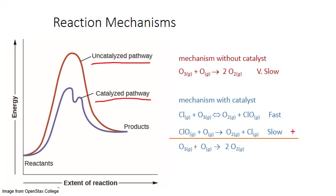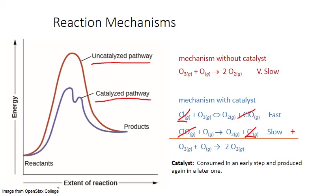Not all molecules that collide and interact in the elementary steps may show up in the net observed process. The catalyst chlorine, for example, is a reactant in the first step and a product in the second, so it cancels itself out when we add the two steps together — another way of defining a catalyst: consumed in an early step and produced again in a later one. Another molecule that cancels out when we add the steps together is chlorine monoxide, which is a reaction intermediate — produced in an early step and consumed in a later one. In many reactions with multiple steps, you never see the intermediates because they're consumed as quickly as they are produced.